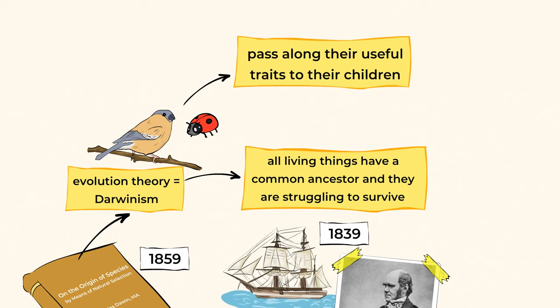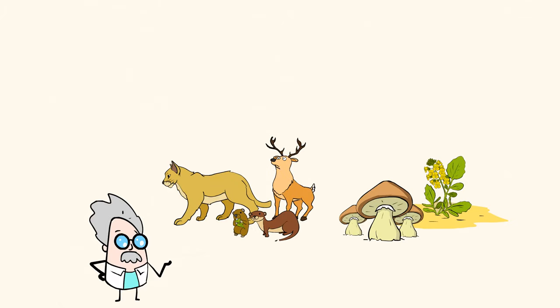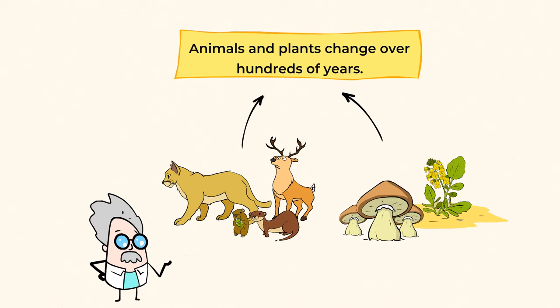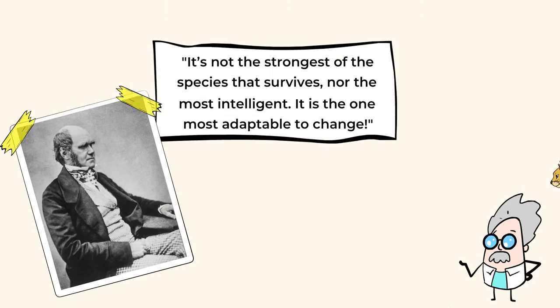Those individuals then pass along their useful traits to their children. In this way, the new generation will be better equipped for survival than the older one. That's why animals and plants change over hundreds of years. They're actually adapting. That's why Darwin said it's not the strongest of the species that survives, nor the most intelligent.